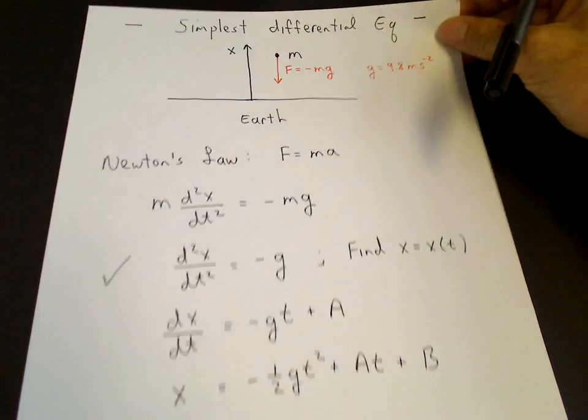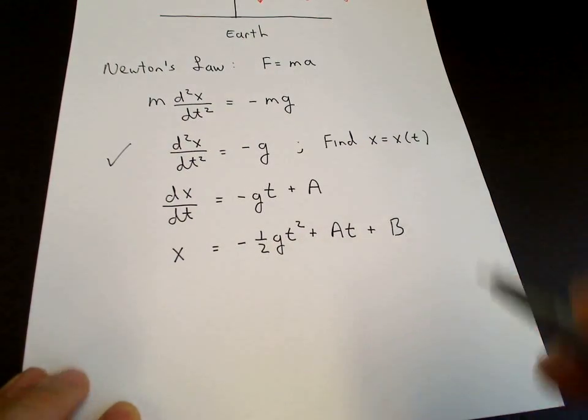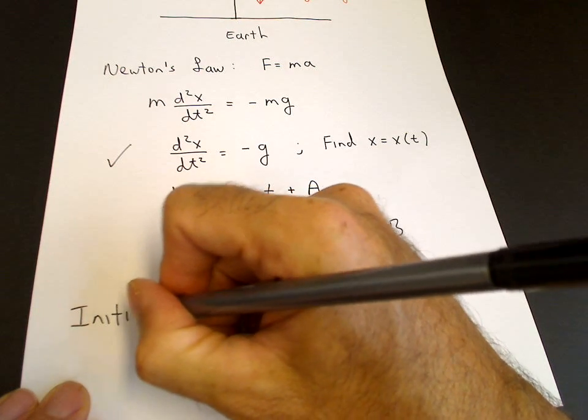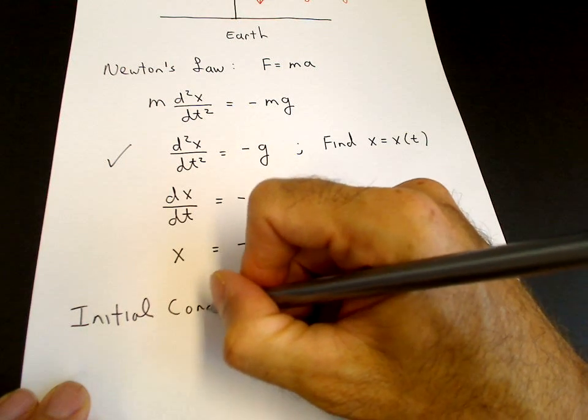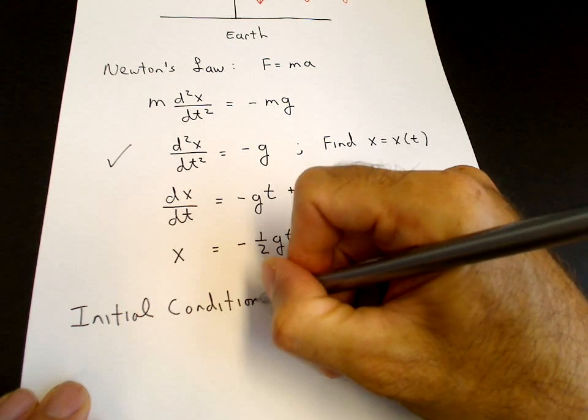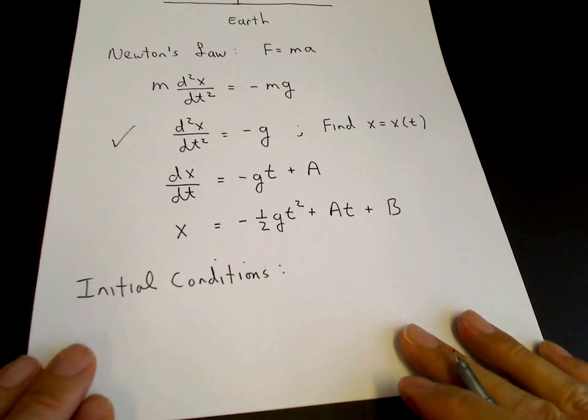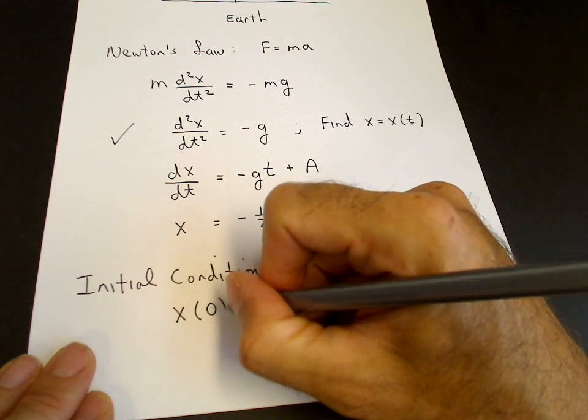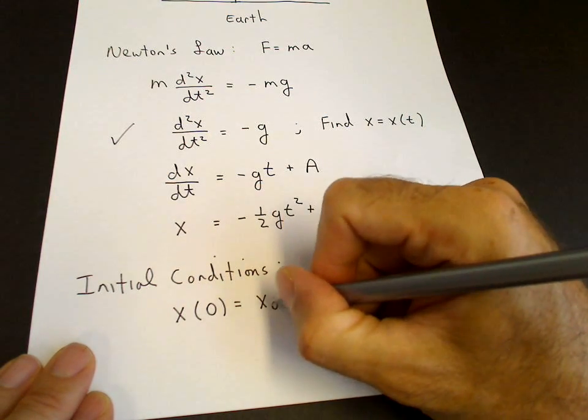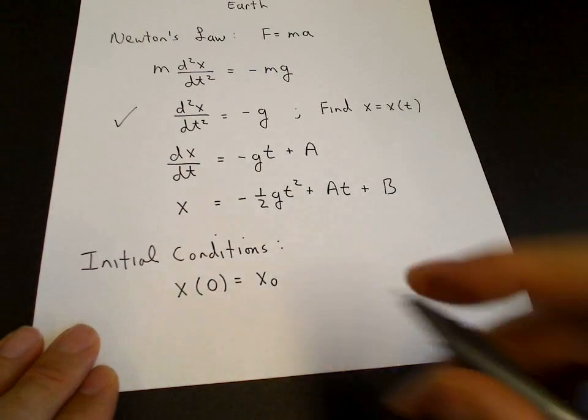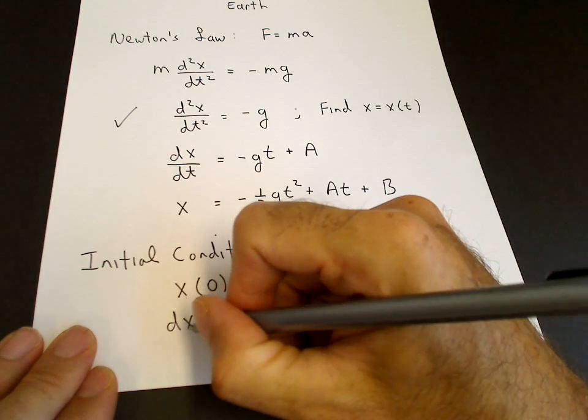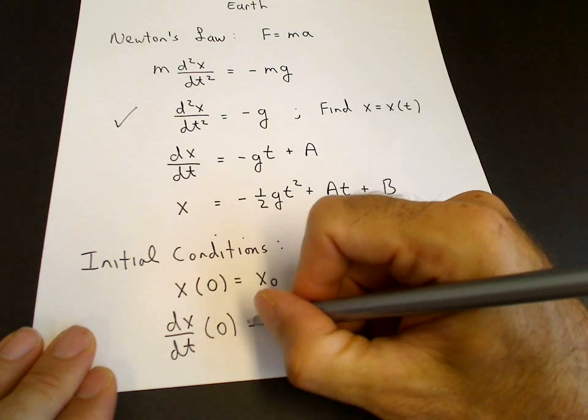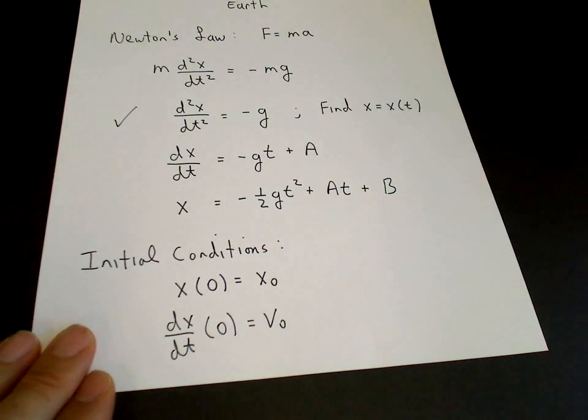So in order to solve this differential equation with initial conditions, we need to specify what those initial conditions are, which here is the initial position x at t equals 0 is x0, and the velocity dx dt at t equals 0 is the initial velocity v0.